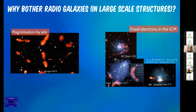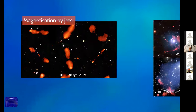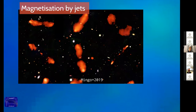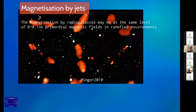Just to give you a little context: why should we bother about radio galaxies in large-scale structures? They are a very fascinating class of objects capable of coupling tremendously different ranges of scales. A first good reason is that they provide a source of magnetization. What has only become clear since recent observations is that if any primordial magnetic field is lower than roughly 0.1 nano-Gauss co-moving, then the magnetization provided by radio galaxies is competitive with that sort of magnetization on the scale of filaments.